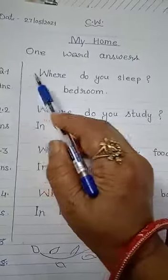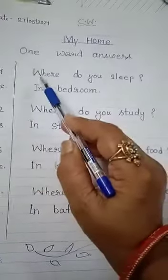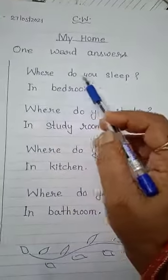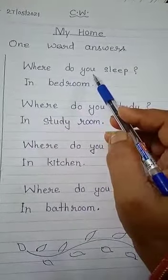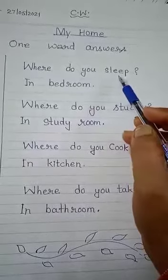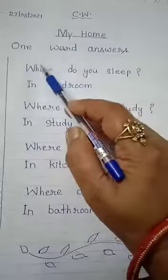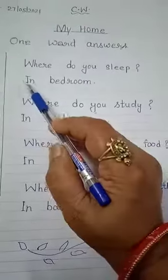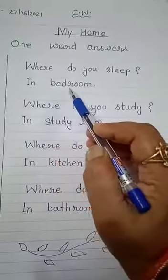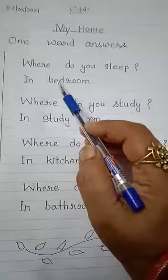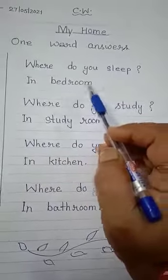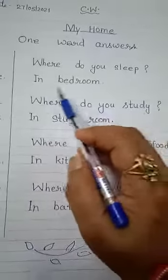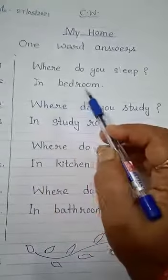Question number one: W-H-E-R-E D-O Y-O-U S-L-E-E-P. Where do you sleep? Aap kahan sotate hain? In bedroom. This is called one word answers. In bedroom.